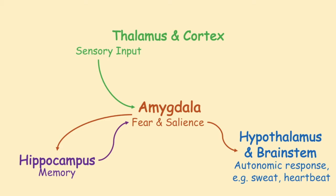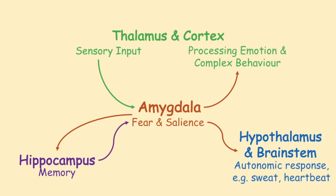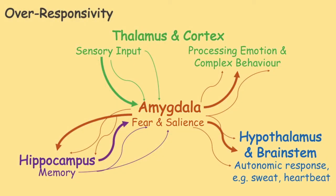The amygdala projects to the brainstem and hypothalamus to influence autonomic functions like sweating and heartbeat, and connects back with the cortex for higher-order processing of emotion and guidance of complex behaviors. In over-responsivity, increased connectivity of these structures results in sensory events being able to quickly activate the entire network, explaining the experience of pain or fear to ordinary sensations.